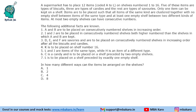Hello everyone, welcome to Aptitude Jab. This set from CAT 2019 Slot 1 DILR says that a supermarket has a place for 12 items A to L on shelves numbered 1 to 16. So there are 16 shelves and you need to place 12 items, so 4 will obviously be vacant. 5 of these items are types of biscuits, 3 are candies and the rest are types of savouries — so 4 savouries. Only 1 item can be kept on a shelf. Items are to be placed such that all items of the same kind are clustered together with no empty space between items of the same type, and at least 1 empty shelf between 2 different kinds of items.